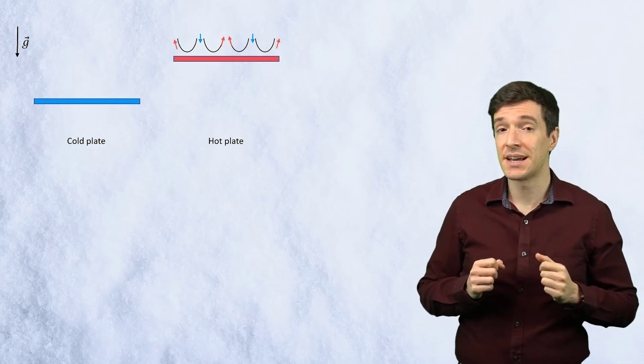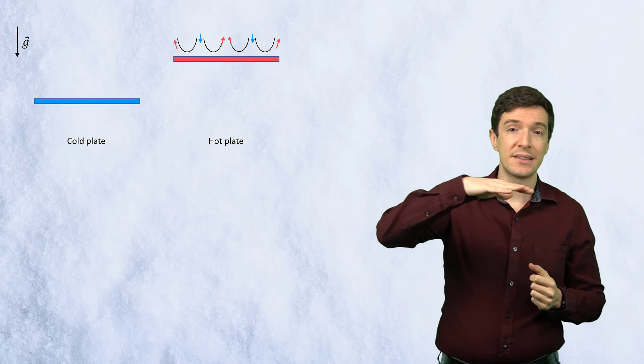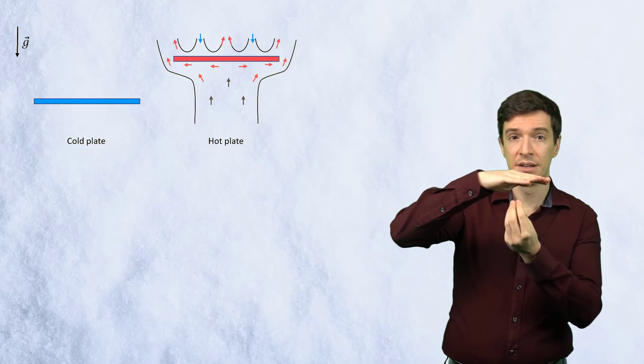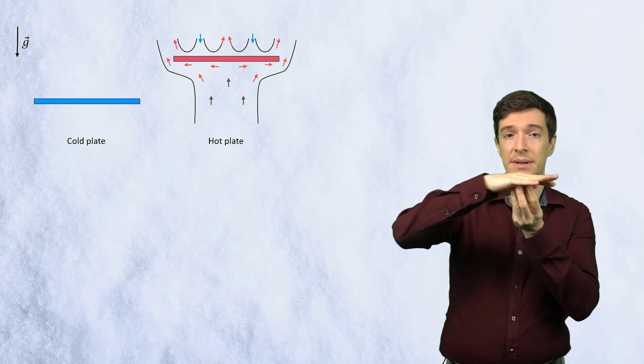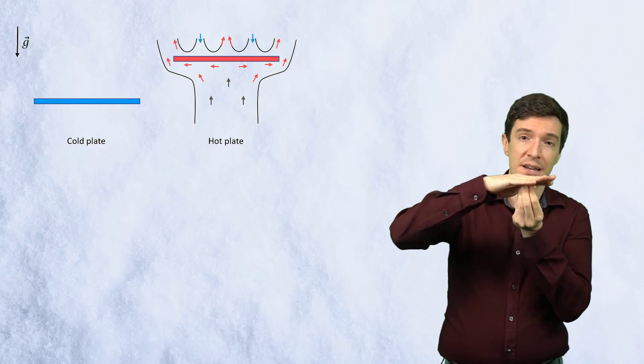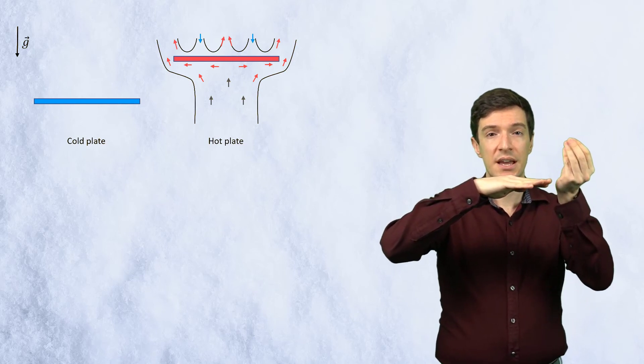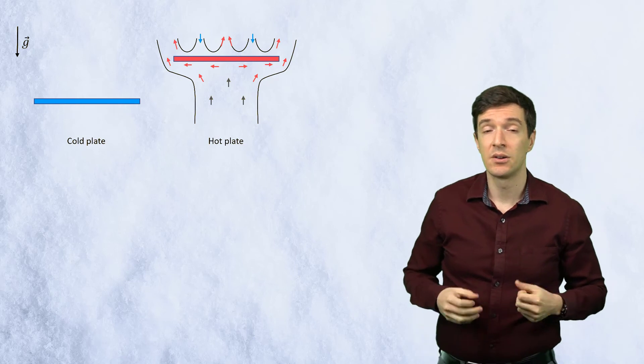On the opposite side, however, the heat transfer is poor. The hot fluid is blocked by the plate and must move sideways before reaching the end of the plate and finally move upward.